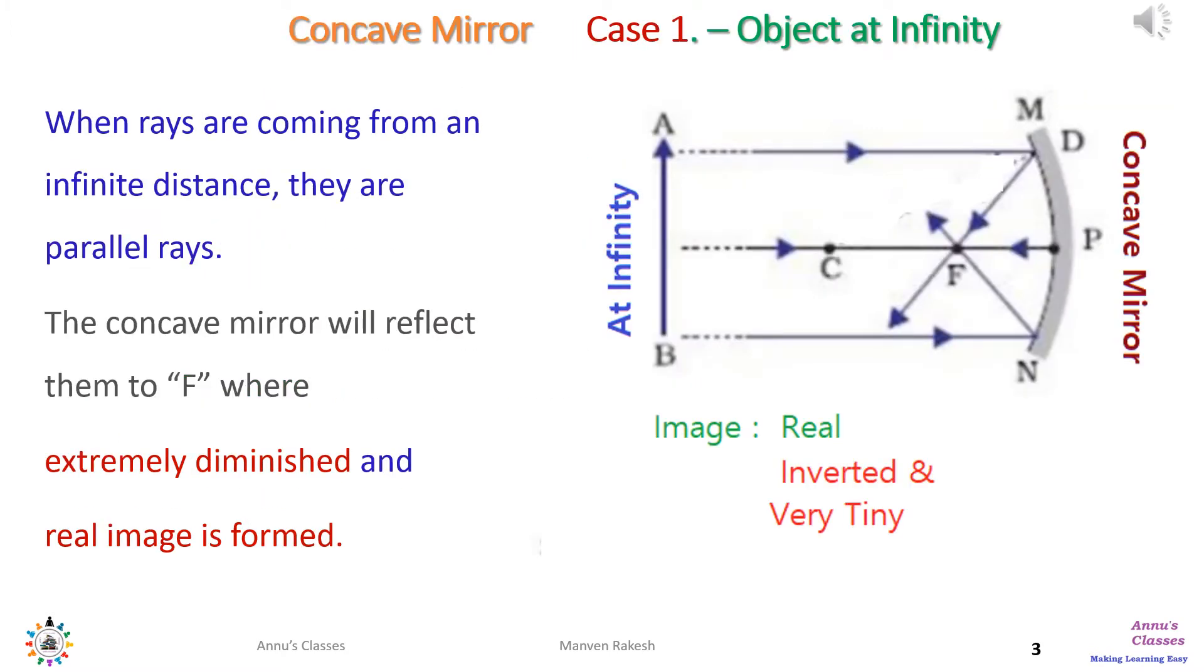When object is placed at infinite distance, the rays coming from it are all parallel. When they fall on the concave mirror, they get reflected and meet at F. So the image is formed at focal point F, which is real, inverted and very diminished.